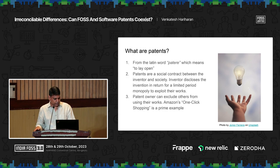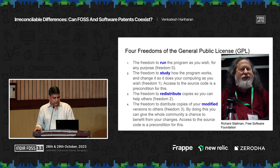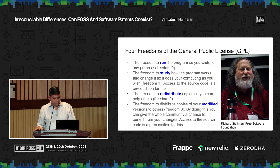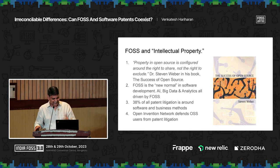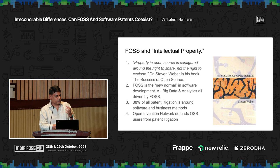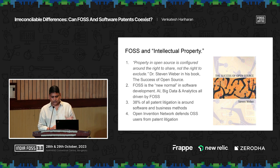If you compare that with the four freedoms of FOSS — the freedom to run the program, to study the program, to redistribute, and to modify the software — Professor Steven Weber, who happens to be Tarunuma's professor, made a brilliant observation. He said that property in open source is configured around the right to share, not the right to exclude. I highly recommend everybody to read Professor Weber's book, 'The Success of Open Source.'